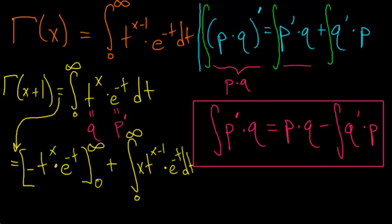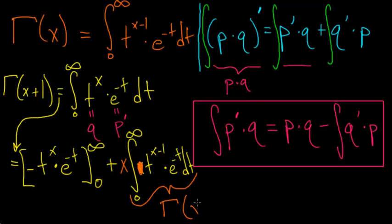We can notice that if we take the x value and factor it out — since it's just a constant as we're integrating with respect to t — and move x outside, we can see that this integral is just the gamma function. So gamma evaluated at x plus 1 is equal to this boundary expression plus x times the gamma function. We just need to evaluate this boundary expression.